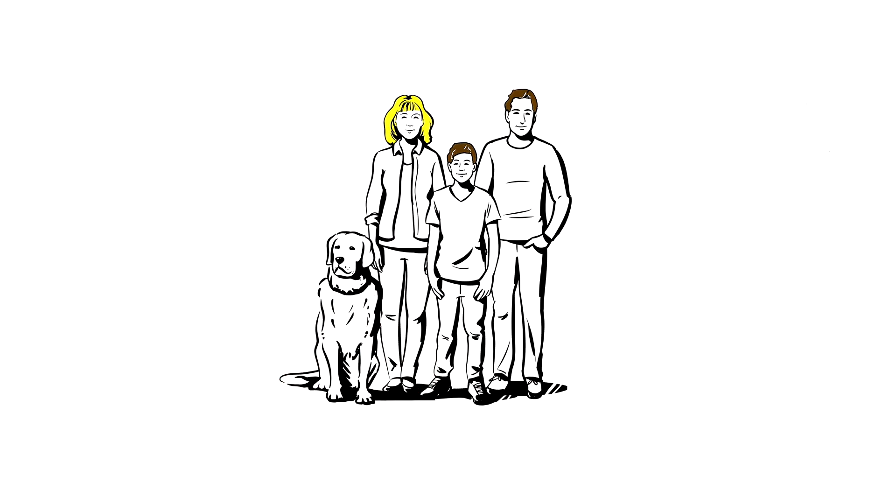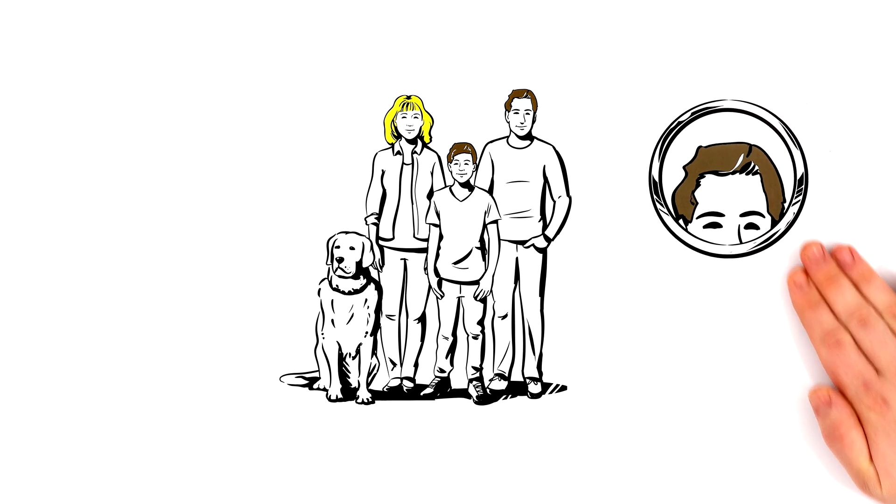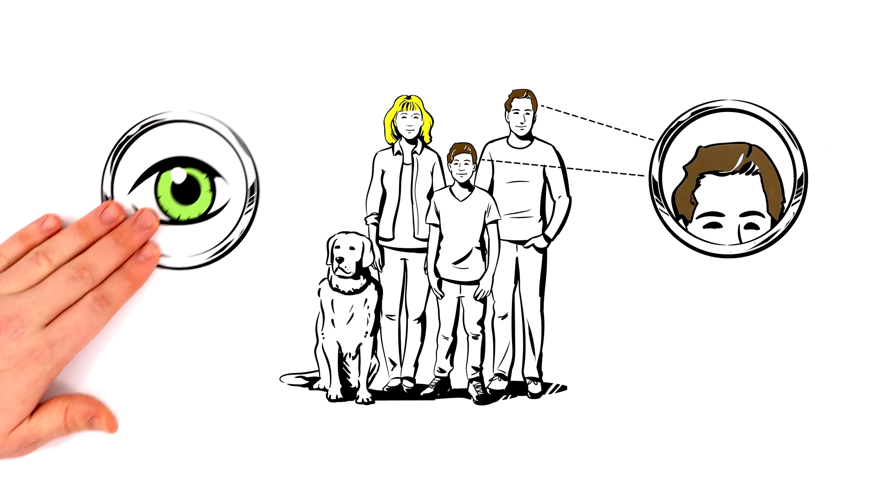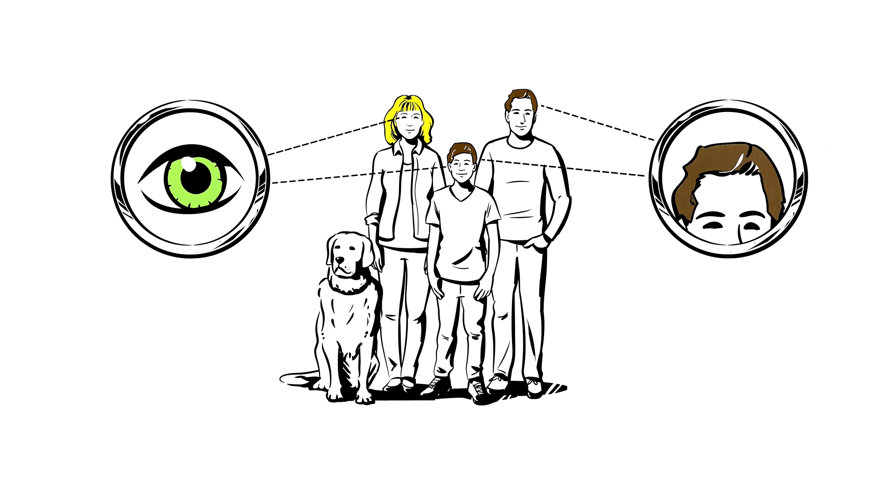These are the Franklins. Anton has the same hair color as his father, but his eyes he got from his mother. Why is that?